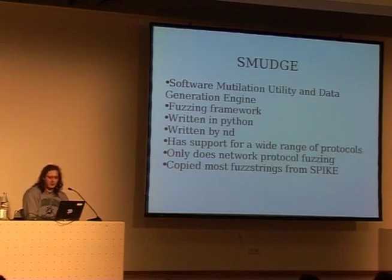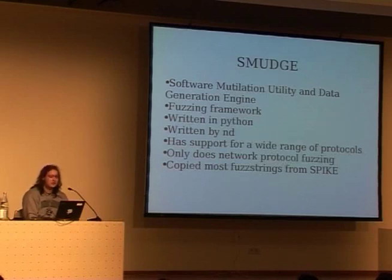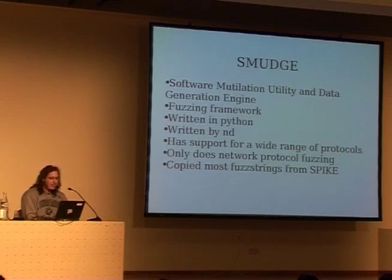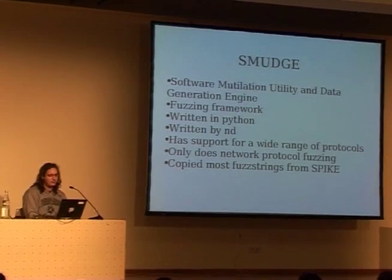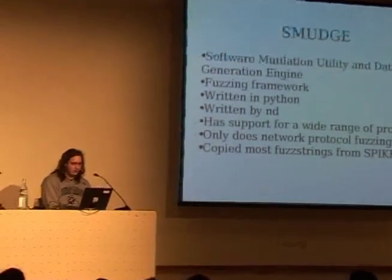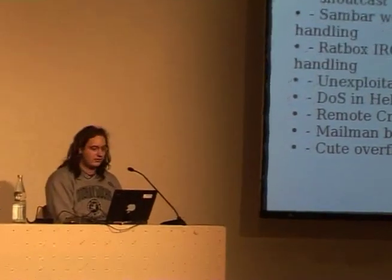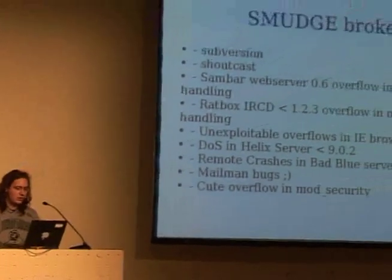Moving on to the next fuzzer: Smudge. It's a fuzzing framework written in Python by a friend of mine, Andy. Smudge stands for Software Mutilation Utility and Data Generation Engine. It has support for a lot of protocols. Unfortunately, it only does network fuzzing. Some of the test cases it uses were taken from Spike. Smudge is pretty cool, though unfortunately it's unmaintained, so it's got some bugs and can be hard to work with. But you can find lots of cool stuff with it — for example, it broke Subversion, Shoutcast, some IRC daemons, a bug in mod_security, and a whole range of other stuff.